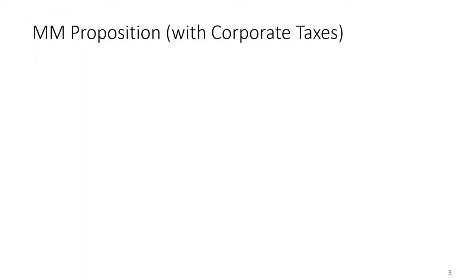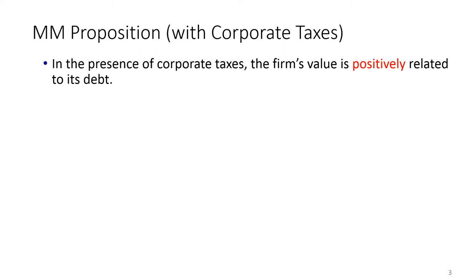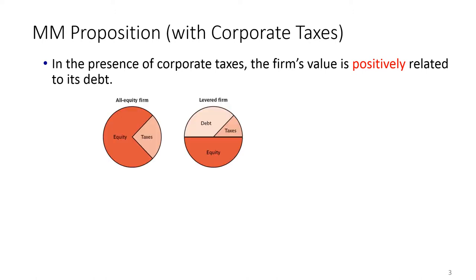In the presence of corporate taxes, the firm's value is positively related to its debt — the higher the debt, the higher the firm value. The basic intuition can be explained from the pie theory. The pie on the left represents the all-equity firm, where both equity holders and the government through taxes have claims on the firm. The value of the all-equity firm is that part of the pie owned by equity holders.